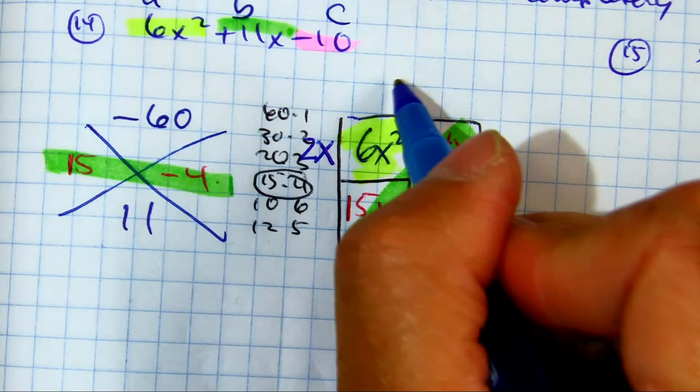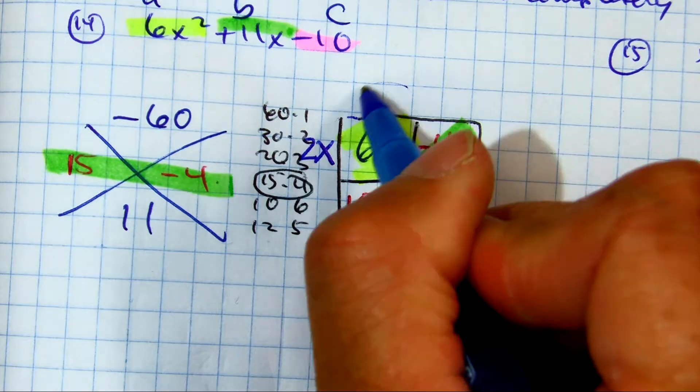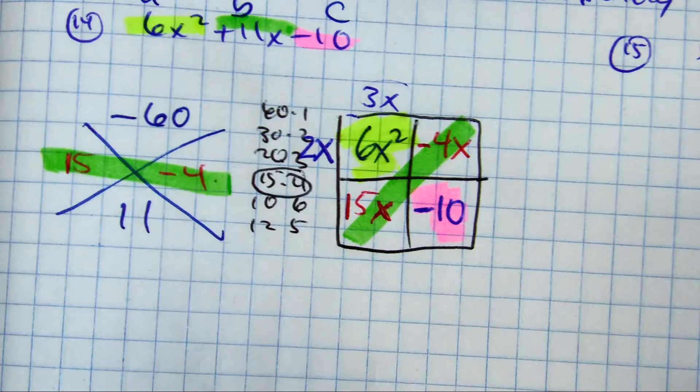Sophie, what would I put up here? Correct. 3X times 2X is 6X squared. Sophie, what goes up here?